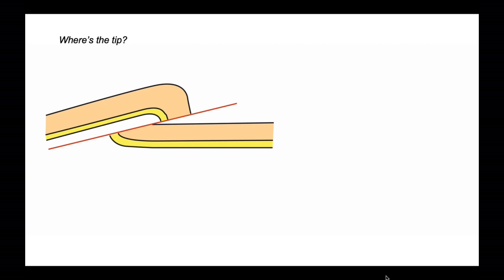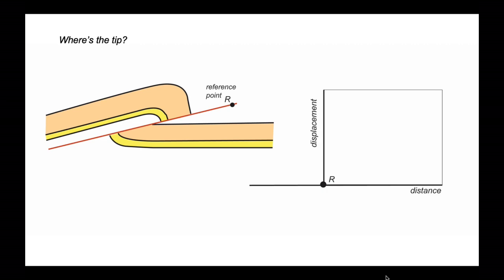We'll use the analysis proposed by Williams and Chapman. We'll set up a reference point on the fault plane — this is arbitrary, but it gives us a place from which to make measurements. We set up a displacement distance diagram with the reference point at the origin. We then measure back to the top of the orange layer in the hanging wall, take this onto our displacement distance diagram, and the displacement on the top of the orange is this distance. We can now use this value to find it on the plot.